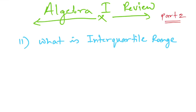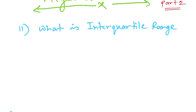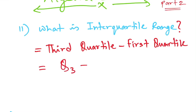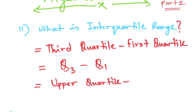Welcome back to my channel. Today we'll review Algebra 1 Part 2. Let's take a look at question number 11: what is interquartile range? So the interquartile range is basically the third quartile minus the first quartile — Q3 minus Q1. You can also write it as upper quartile minus lower quartile.